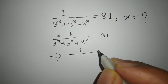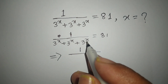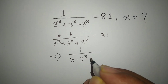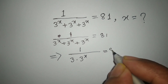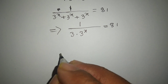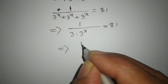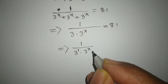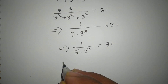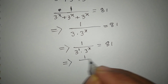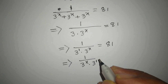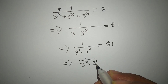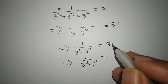Or: 1 divided by 3 to the power x, plus 3 to the power x, plus 3 to the power x equal 81. We can write 1 by 3 to the power x, dot 3 to the power 1, and this 3 to the power x, 3 to the power x, and this 3 to the power 1, equal 81.